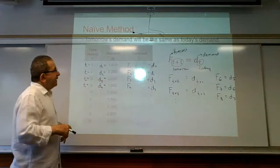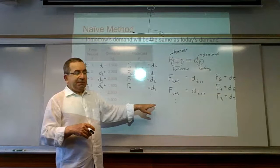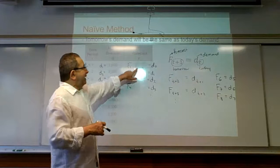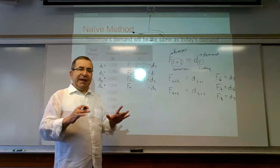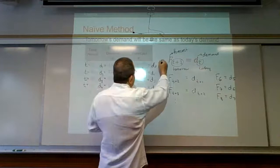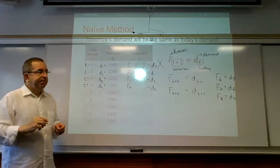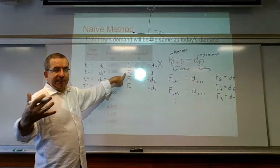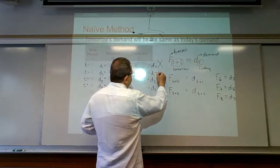We can just plug in the numbers, because these are demand observations given in the table. For F1, we need D0. However, D0 is not given — we have D1, D2, D3, etc. So we cannot forecast period 1. However, we can forecast period 2, because to forecast period 2 we need D1, which we have. D1 equals 1,600.